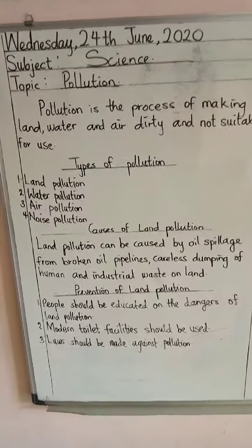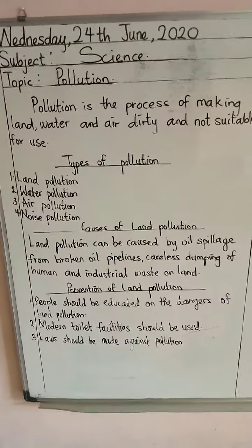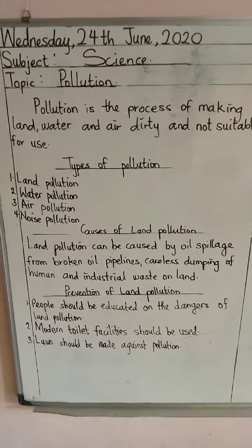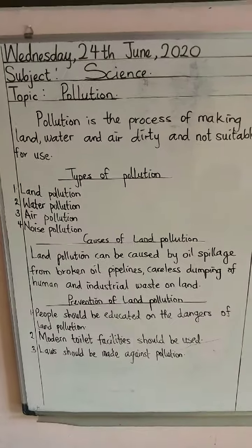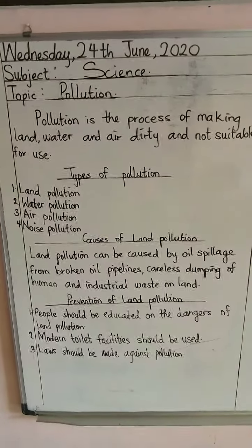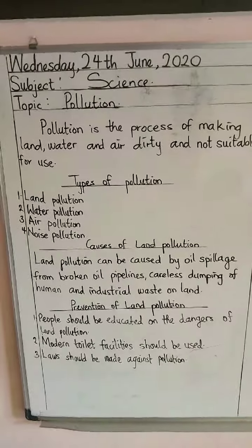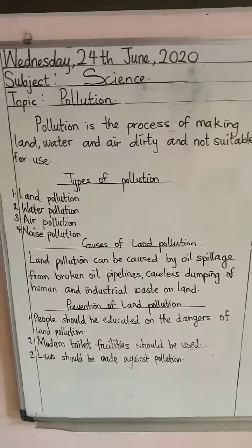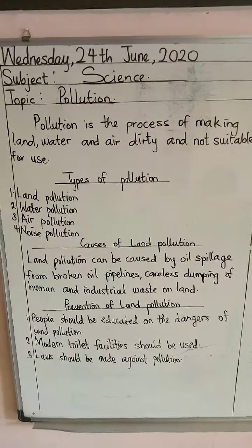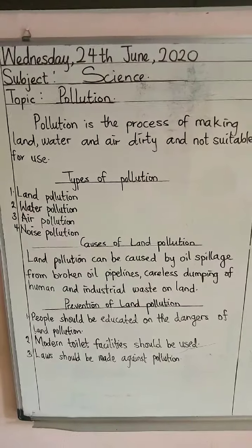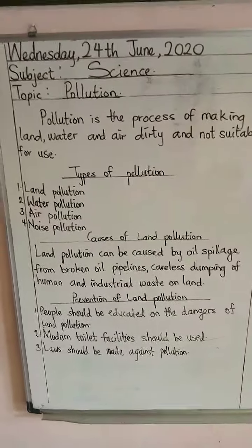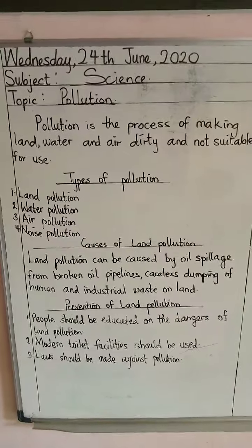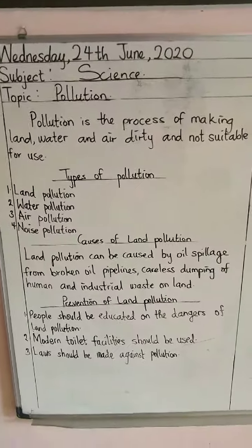Number three: laws should be made against land pollution. If the government places a law stating that anyone caught contaminating land should be arrested, that is the law to avoid land pollution.